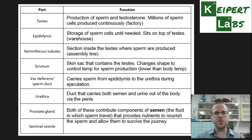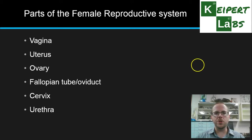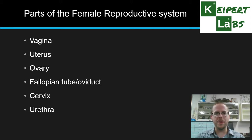We're now going to move on to the female reproductive system. The parts include: the vagina, the uterus, ovary, the fallopian tube (also known as the oviduct), cervix, and urethra. There are fewer parts to go through today, but that doesn't mean it's any less complicated.